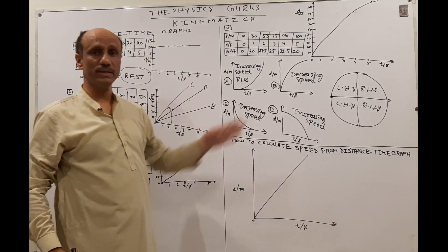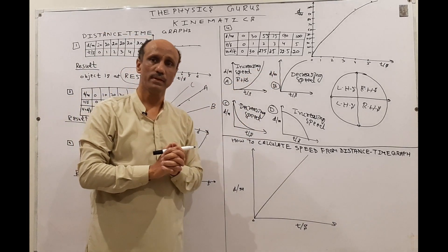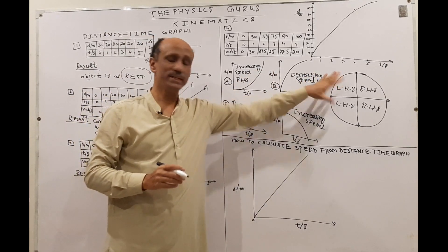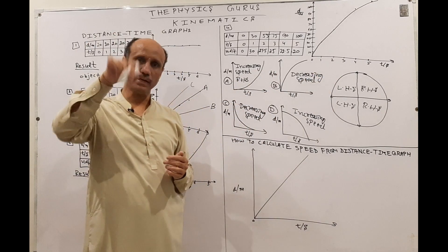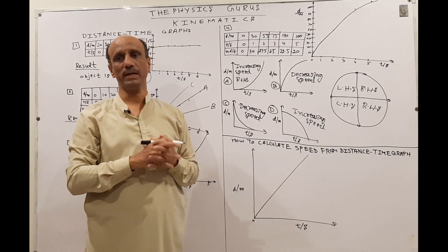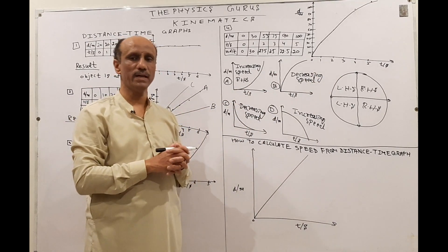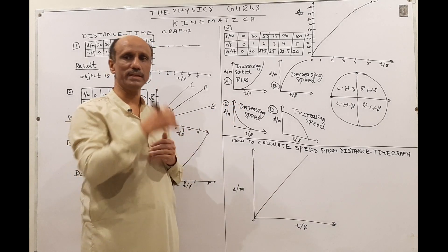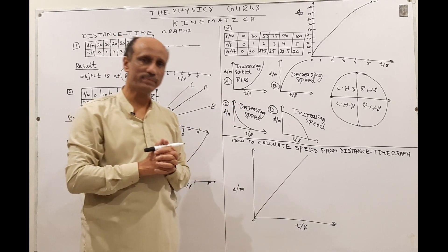To summarize: if you remember this simple method — draw a circle, cut it into four parts, and compare the given graph curve with the circle segments — you can determine whether it is the right-hand side (increasing speed) or the left-hand side (decreasing speed).